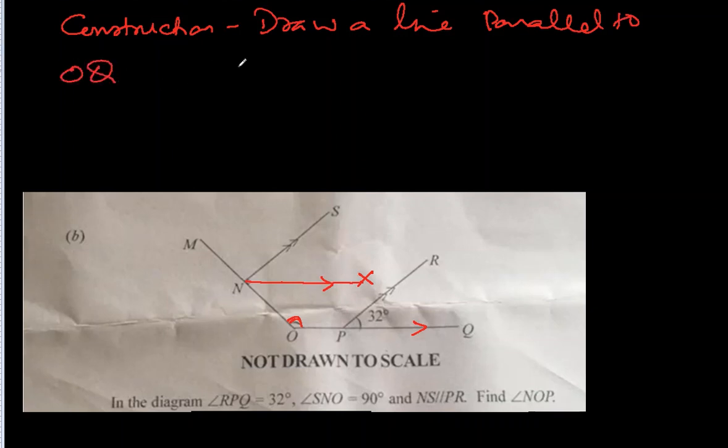So NX. So you can write it construction. Draw a line parallel to OQ. And that is NX is parallel to OQ. Right.